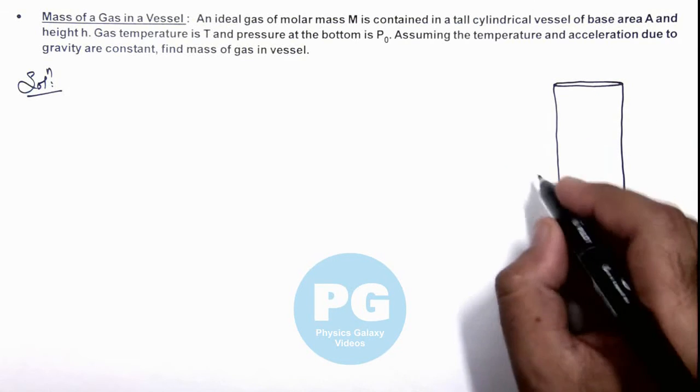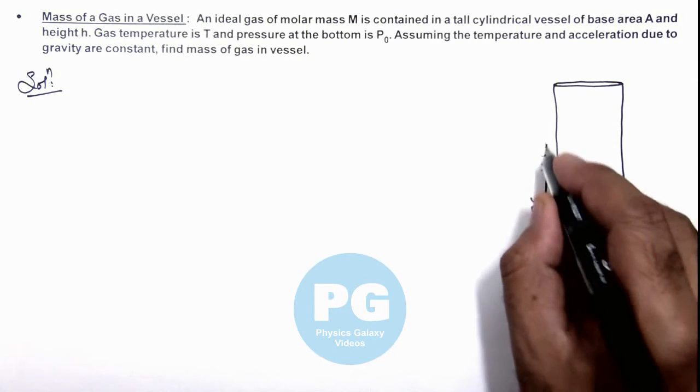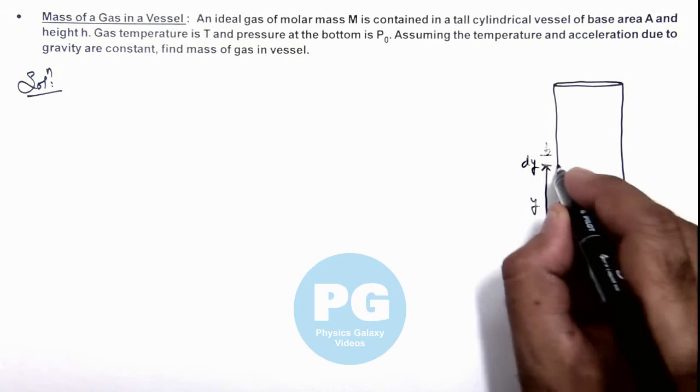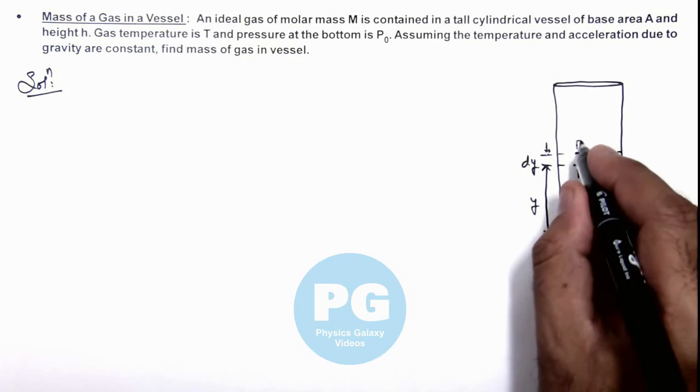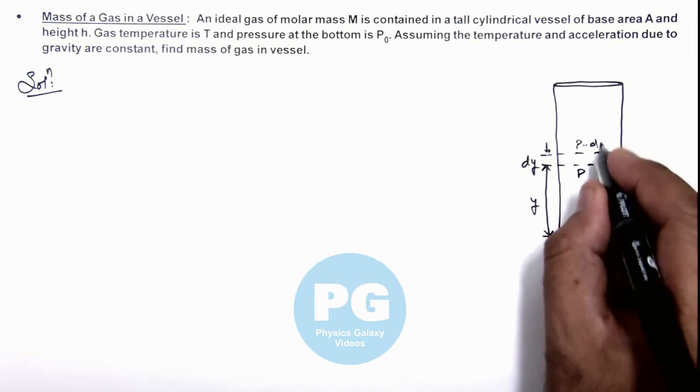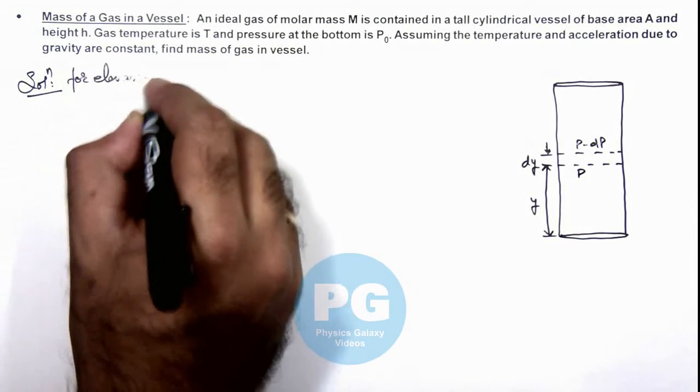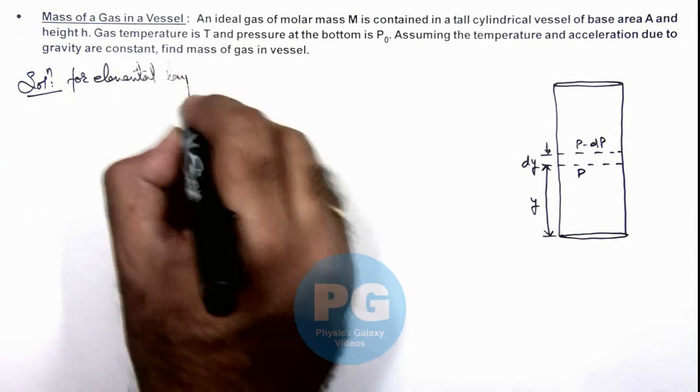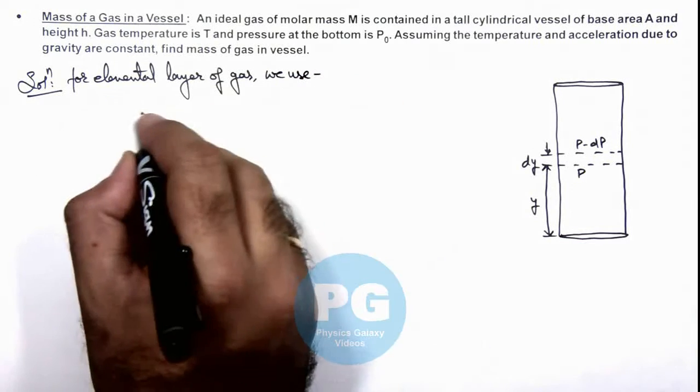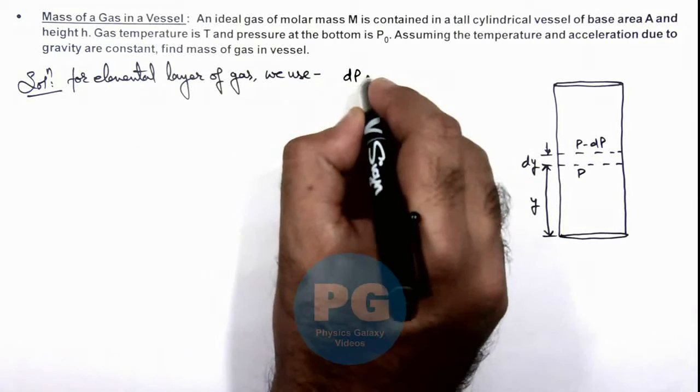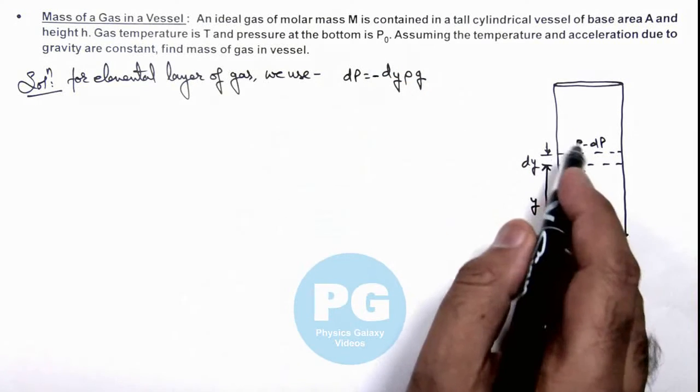So to analyze it, we can consider an elemental layer of gas at a height y and layer width dy. Then we can see if gas pressure below this layer is P, then above it should be P minus dP. So we can write for elemental layer of gas, we use dP = -dy ρ g. I am taking dP negative because with height pressure is decreasing.